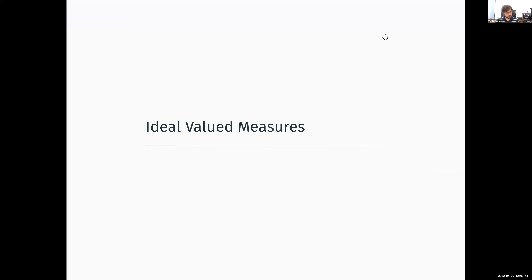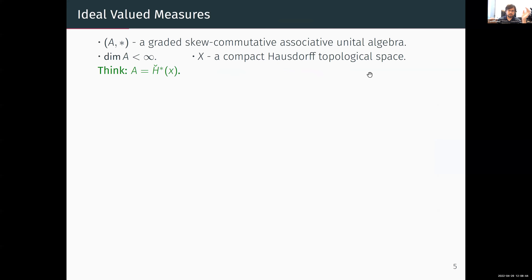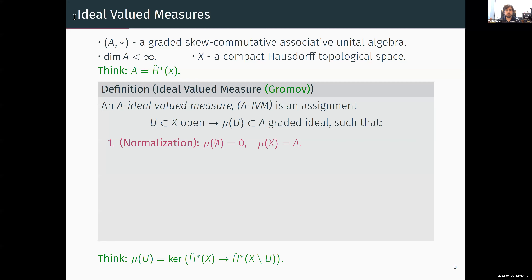So, ideal valued measures — what are they? Given a graded skew-commutative associative unital algebra — just think of the cohomology algebra of some compact Hausdorff topological space, and Čech cohomology for technical reasons which will be apparent in a minute — assuming a finite-dimensional algebra, an ideal valued measure, a notion due to Gromov, is an assignment that assigns to every open set in X some graded ideal in the algebra such that a list of measure-like axioms are satisfied.